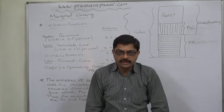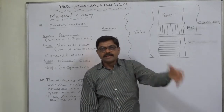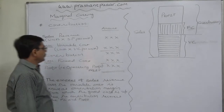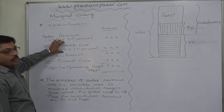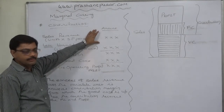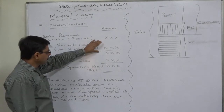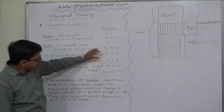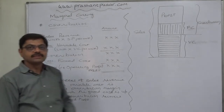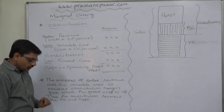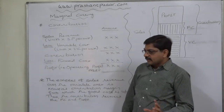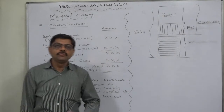In marginal costing, first we write off only variable cost from our sales revenue. The balancing amount — that is, the excess of sales revenue over the variable cost — is known as contribution or contribution margin. So we can define the contribution margin as: the excess of sales revenue over the variable cost is contribution.